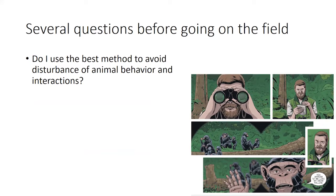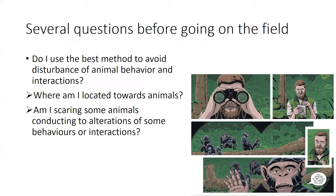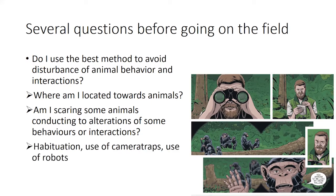The second question you can ask is whether you use the best method to avoid disturbance of animal behavior and interaction. When you are in the field, you disturb the behavior of animals and you don't observe all animals equally. You can wonder where you are located relative to animals, whether you are scaring some individuals, and which method to use based on how animals are habituated to you — for instance, using camera traps or robots, since animals are less scared by robots than by humans.